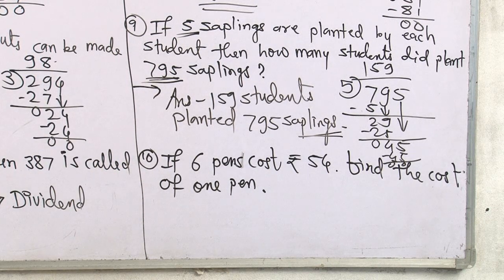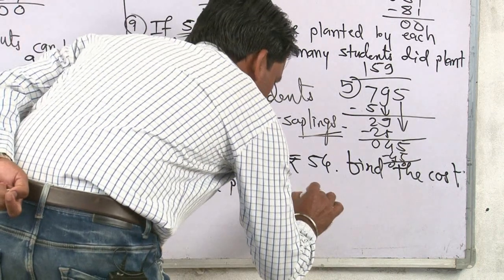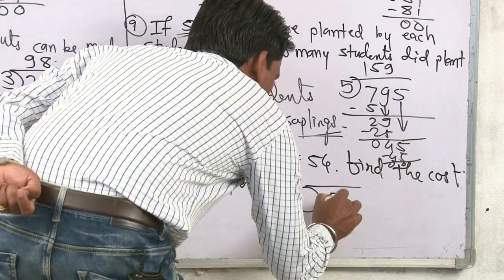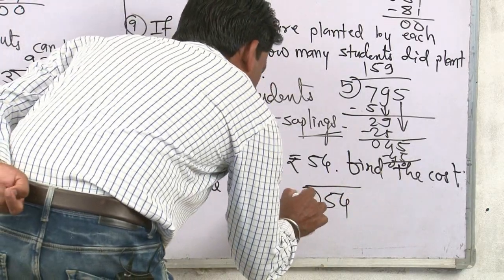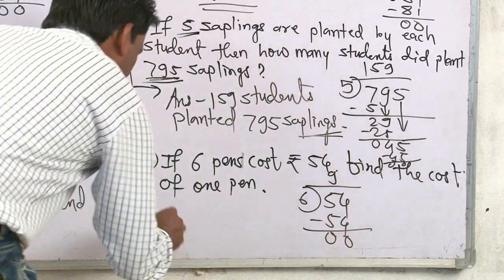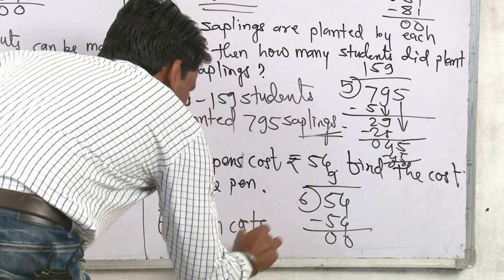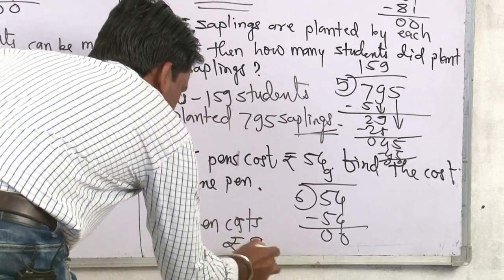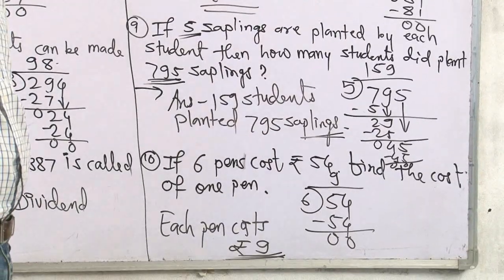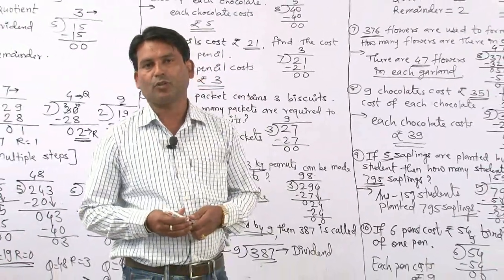Tenth one: if 6 pans cost rupees 54, find the cost of one pan. We divide 54 by 6: 6 nines are 54. So each pan costs rupees 9. Here we have finished our lesson on division. Thank you.